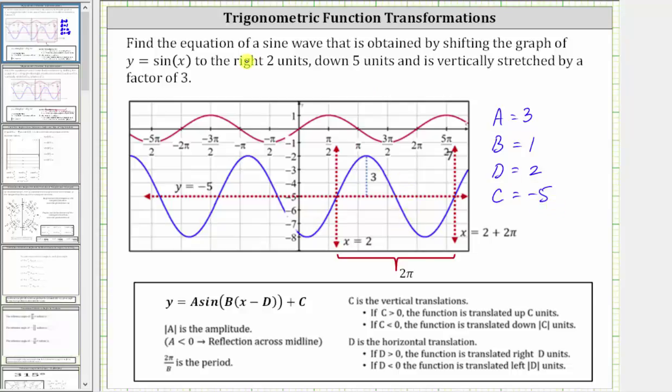And therefore, the graph of the blue sine function is y equals three sine of—again, because b is one, we can leave it off. We will just have sine of the quantity x minus two. And then for plus c, instead of writing plus negative five, let's just write minus five.